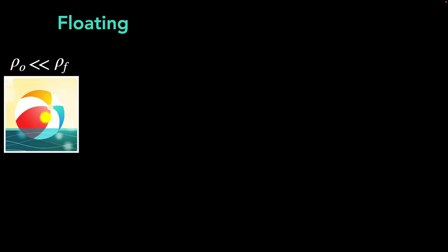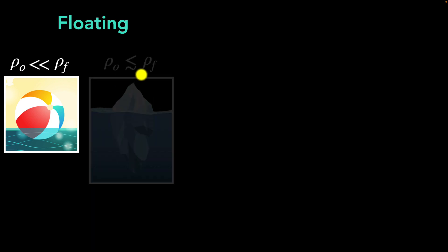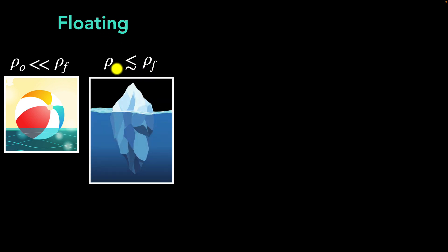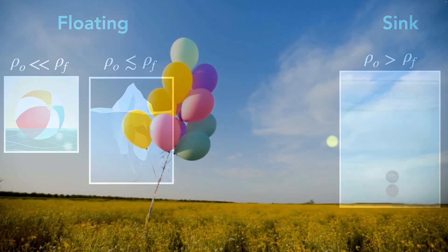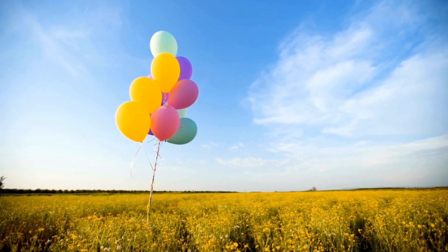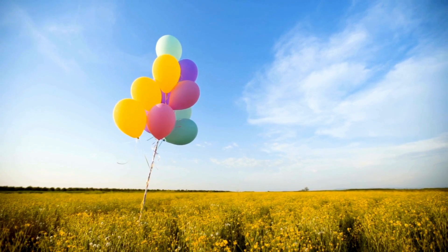Higher the density of the object, more it needs to be submerged to reach equilibrium. When the density of an object is smaller than the density of the fluid, it will float, and the amount submerged depends on how small the density is. If the density is very close to the fluid's density but still smaller, most of it will be submerged. If the density is higher than the fluid, the object sinks. This works for any fluid — air is also a fluid and can exert a buoyant force. Since air has very low density compared to everyday objects, we don't usually notice it. But helium's density is smaller than that of air, and as a result helium tends to float — that's why helium balloons rise up.